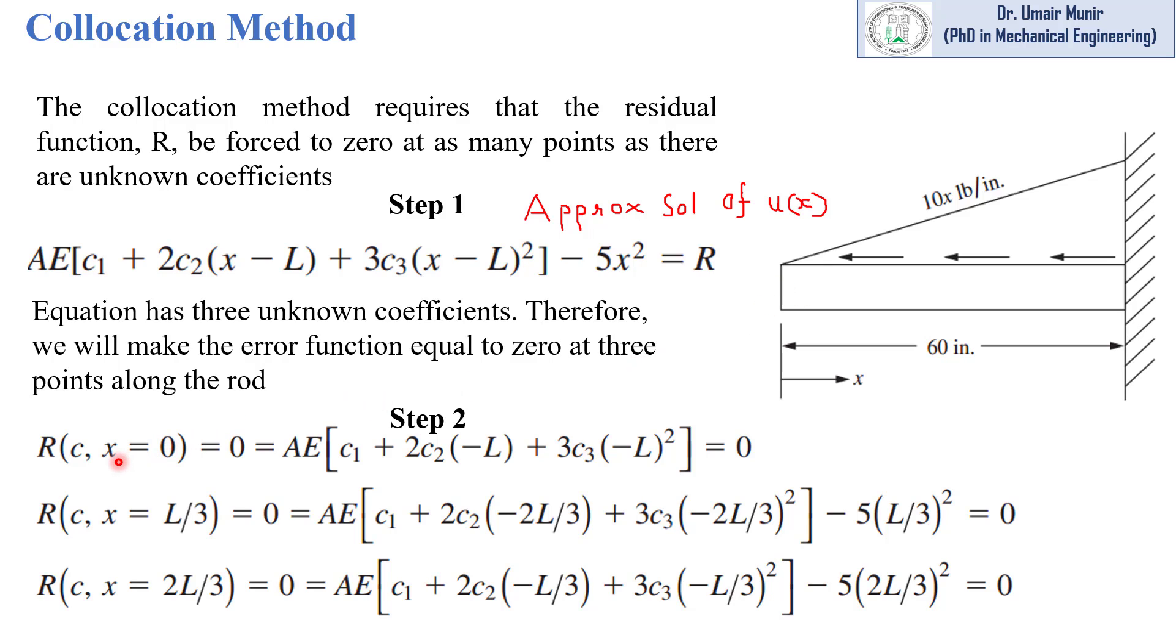The first point will be x equals 0, that means at the starting point of this rod. The second point on this rod is at L by 3, that means at one third of the length of this rod. And the third point is at 2L by 3, that means at the point two third length of this rod.